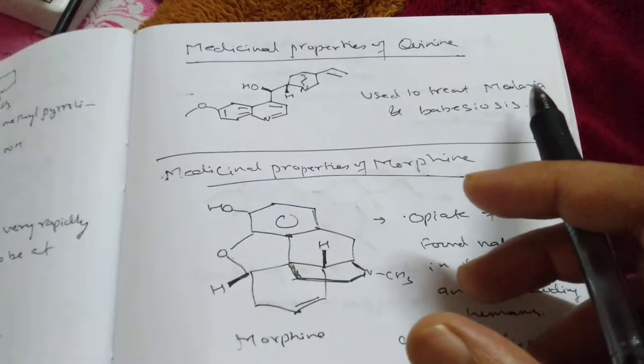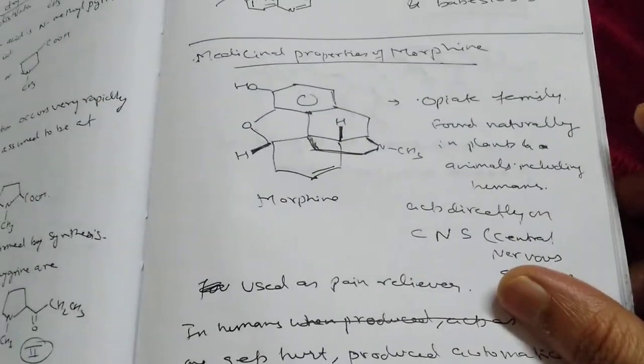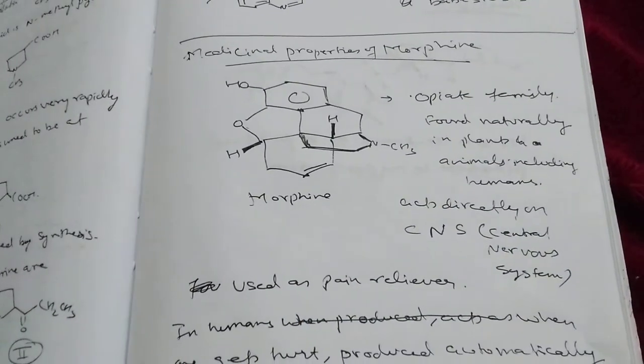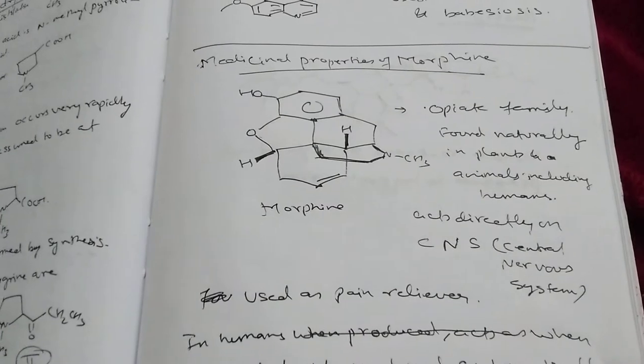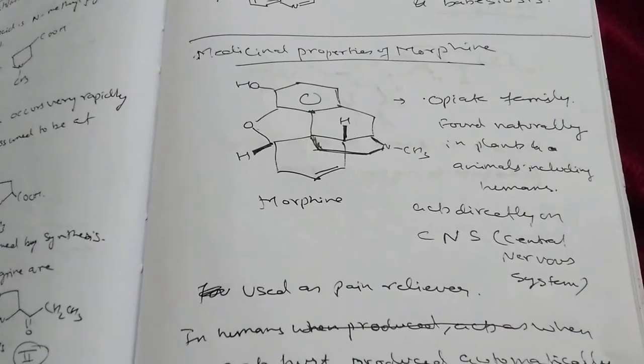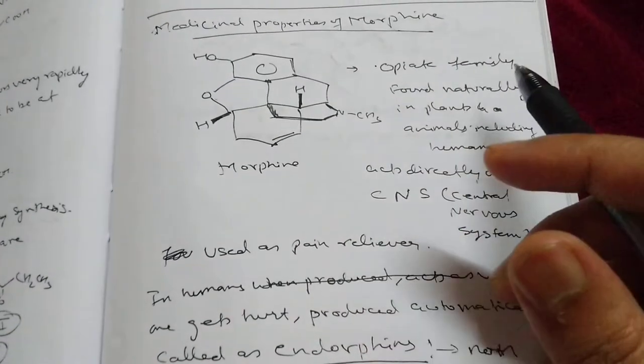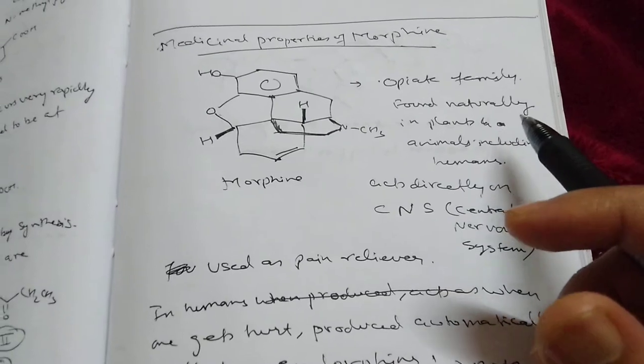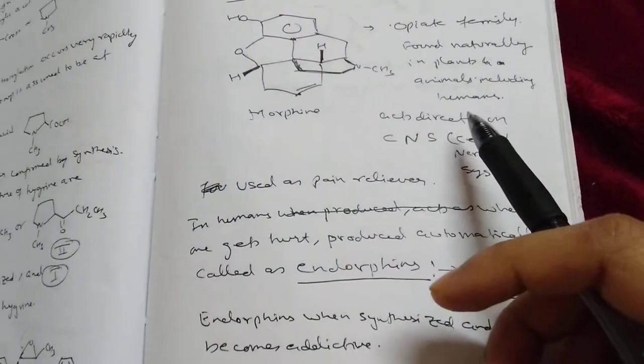Medicinal properties of morphine. Morphine, you heard about it, it's a drug. When you get bad injury, very bad accident, doctors give you huge amount of morphine so that you sleep and your pain will be removed. It is from opiate family.